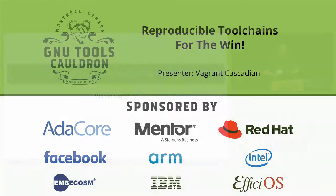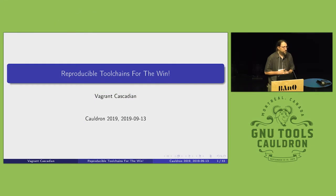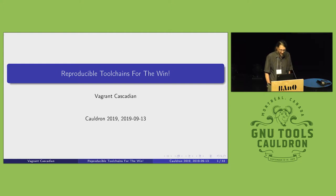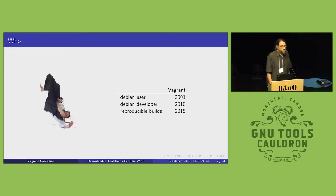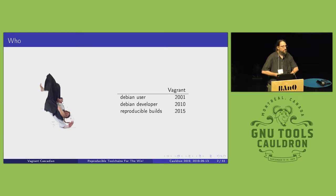Hello, I'm Vagrant Cascadian. I will be talking about reproducible toolchains for the win. Thanks for having me here. A lot of these talks are well over my head, but hopefully I can entice you into helping. A bit about myself: I've been a Debian user since 2001. Somewhere halfway between then and now, I became a Debian developer and got involved in reproducible builds just a few years ago, mostly by hosting a small build zoo full of little ARM boards.